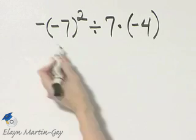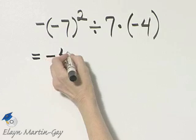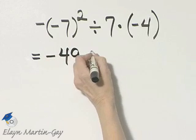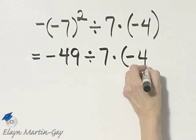So now I will rewrite this sign, and then this evaluates to positive 49, and then divided by 7 times negative 4.